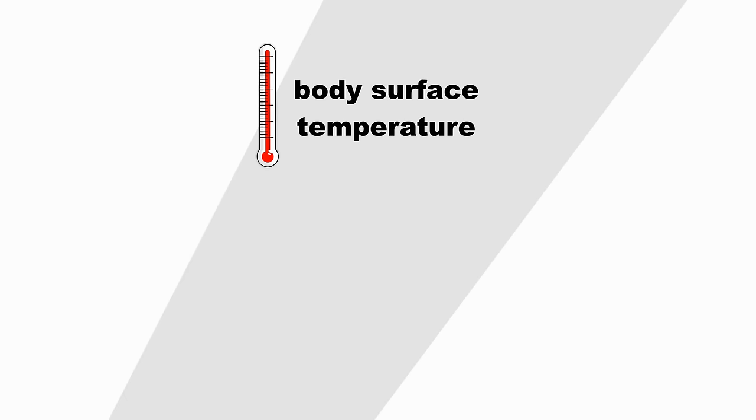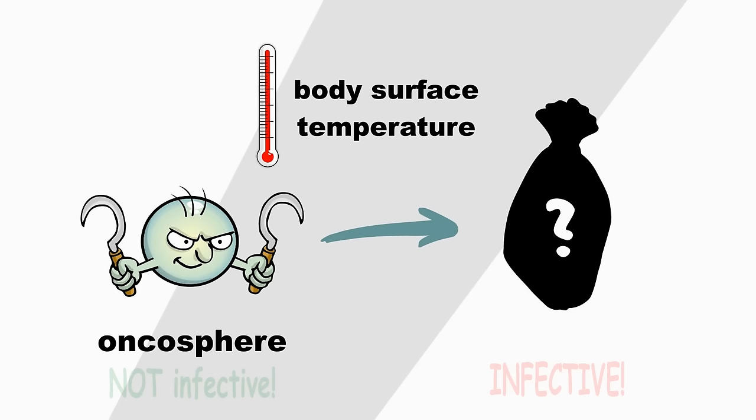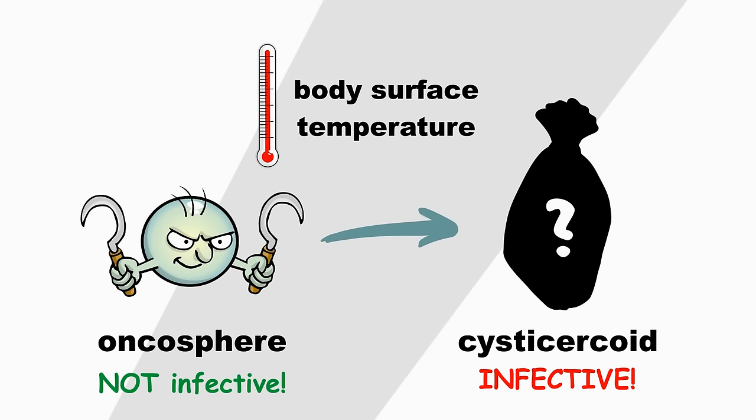Feeling warm and cozy, the oncosphere, still occupying the flea, turns into its form infectious to the definitive host, the so-called cysticercoid, which is a... think of it as a shrunken head in a plastic bag.